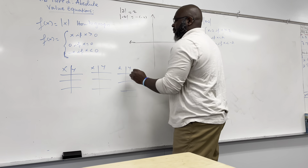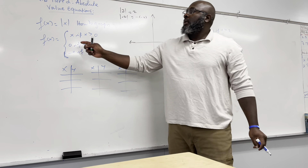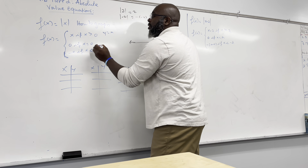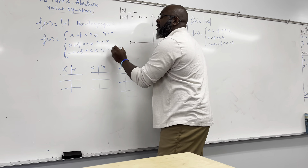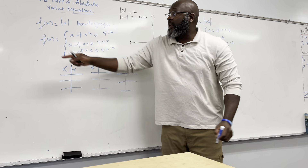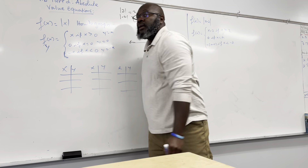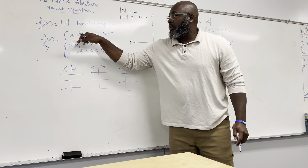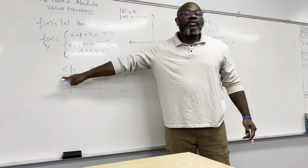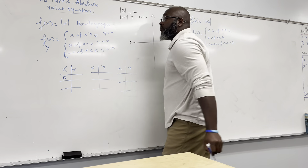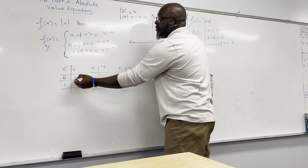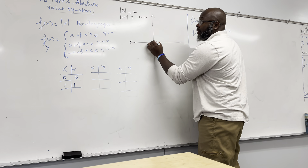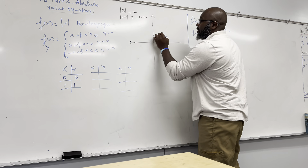Remember, let me explain this again. This x here means y equals x, y equals 0, and y equals negative x — because f(x) and y mean the same thing. So for the first table: when x is 0, y is 0, and when x is 1, y is 1.